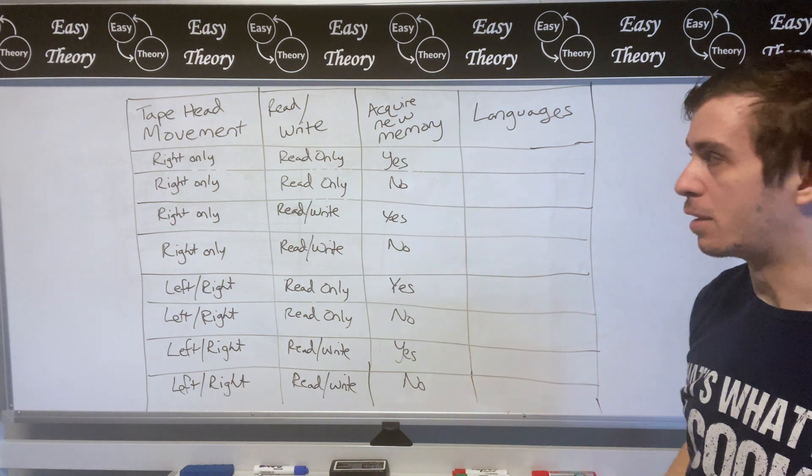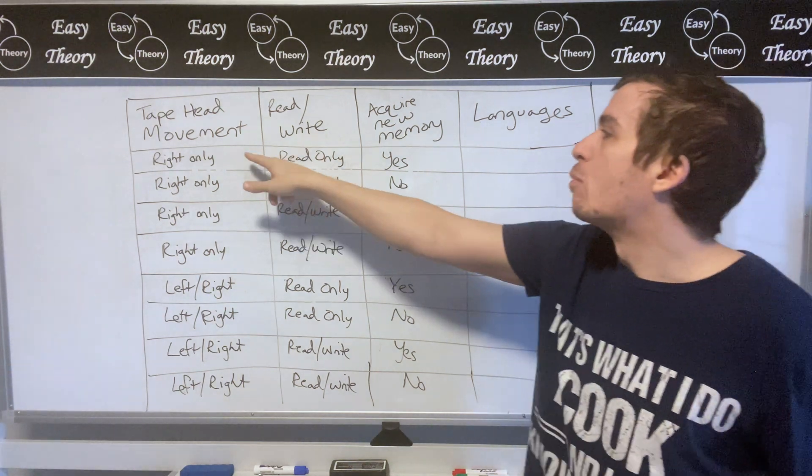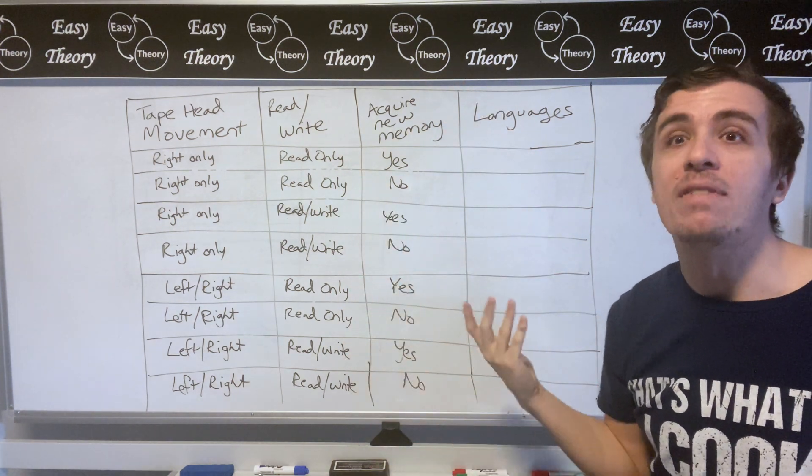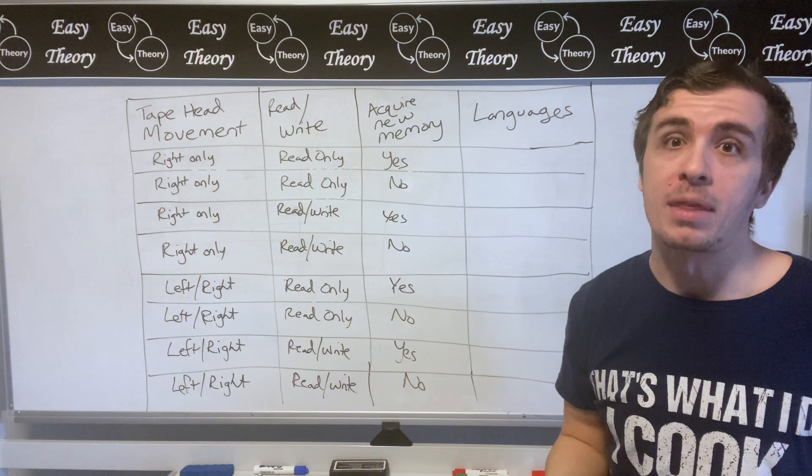I have yes for some and no for others, and you can see that we have two choices here, two choices here, and two choices here, and so overall we have eight different possibilities of what the model can actually be.